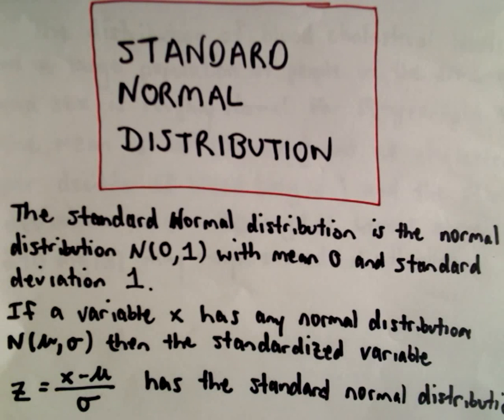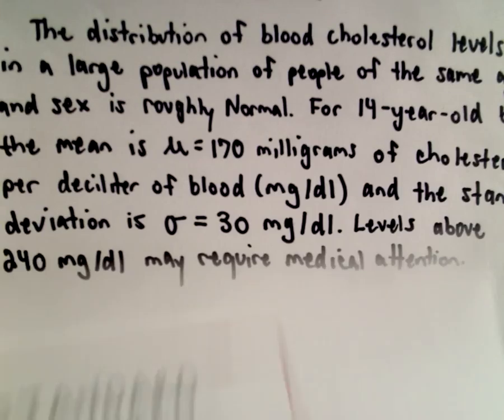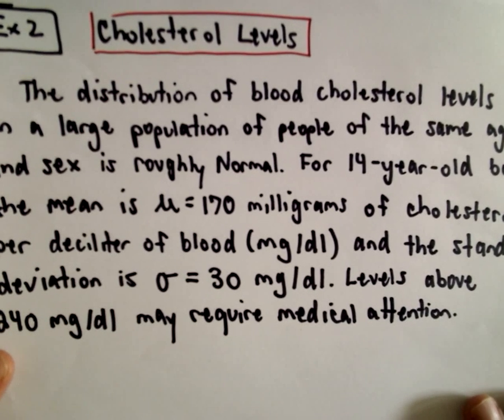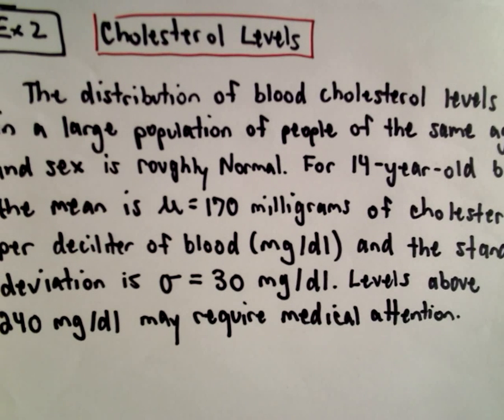So here we're going to do another example using the standard normal distribution. This has to do with cholesterol levels, something that is certainly important to your health. The distribution of blood cholesterol levels in a large population of people of the same age and sex is roughly normally distributed.